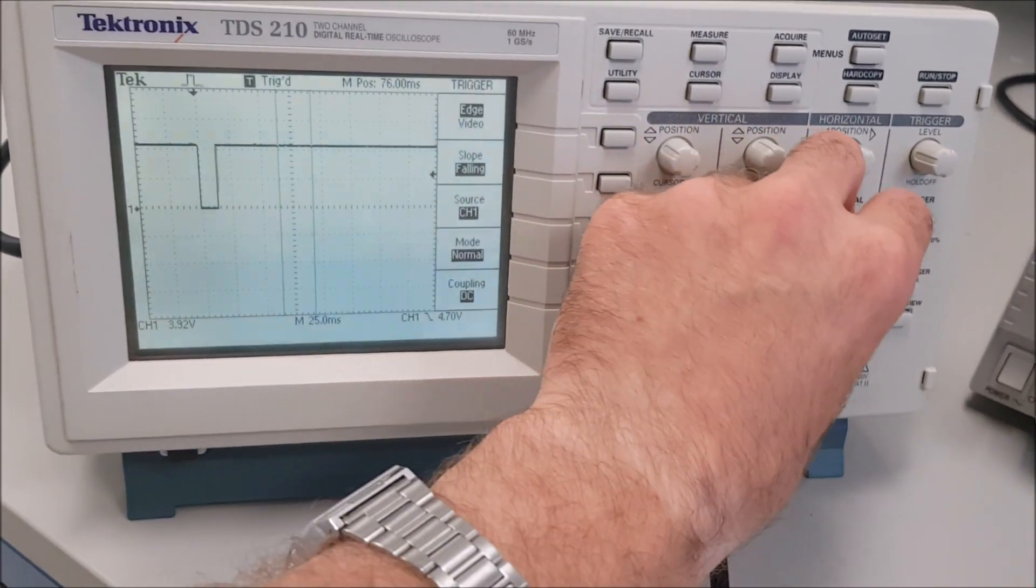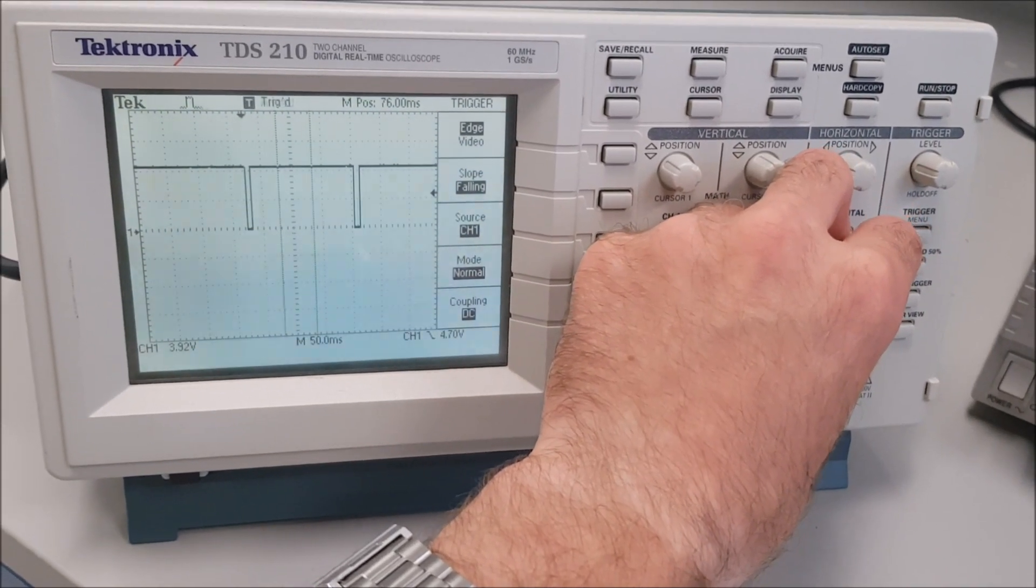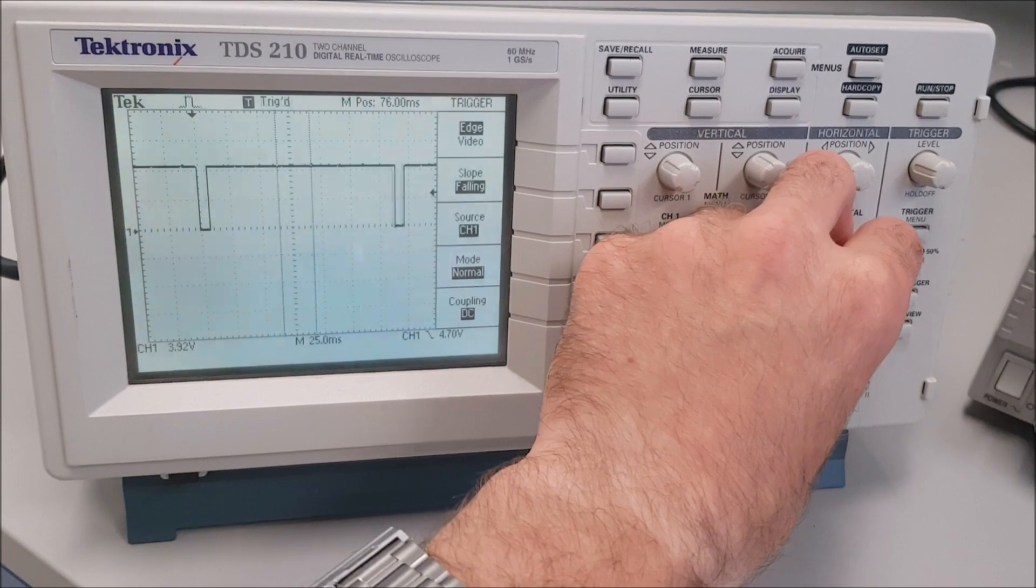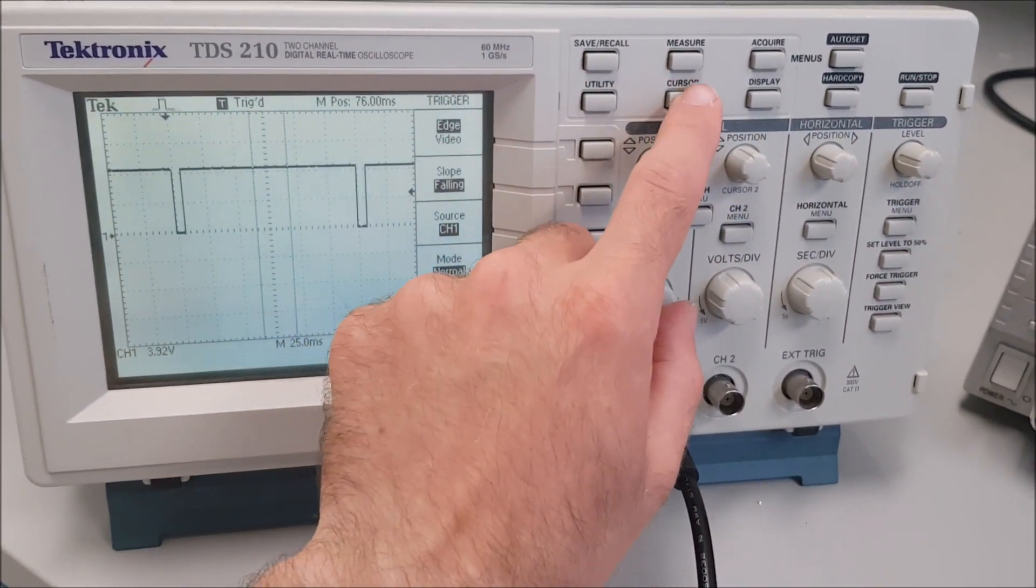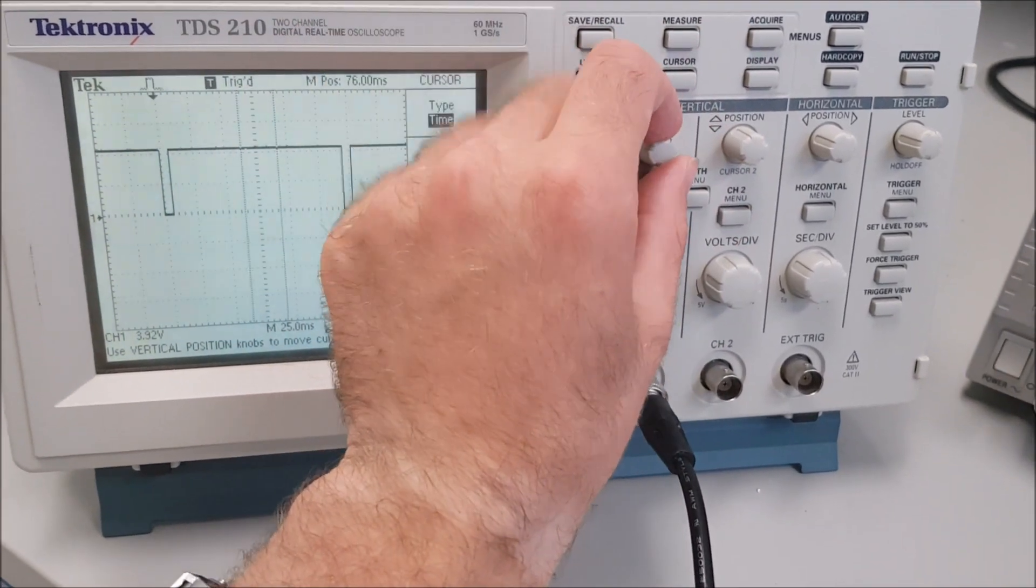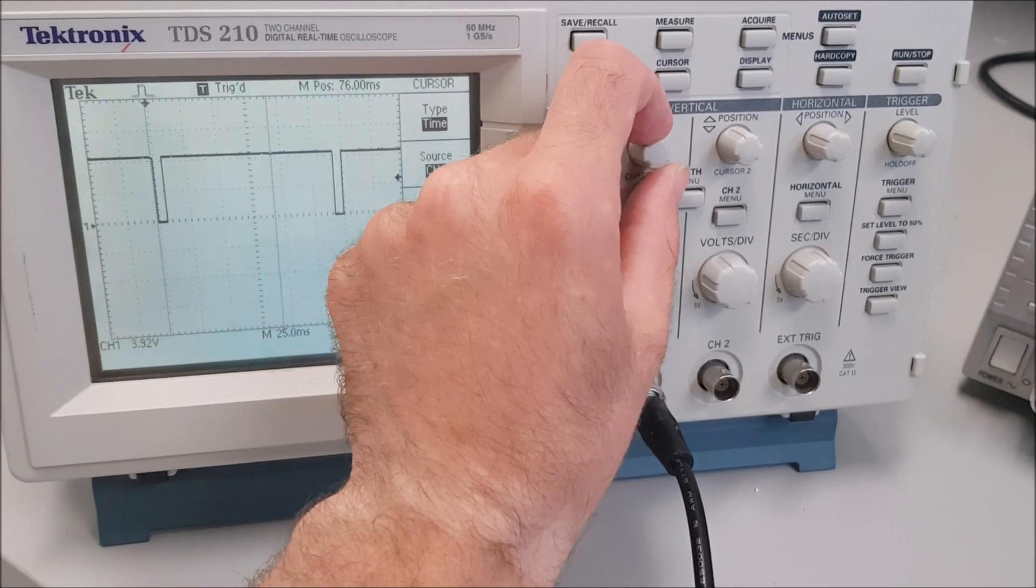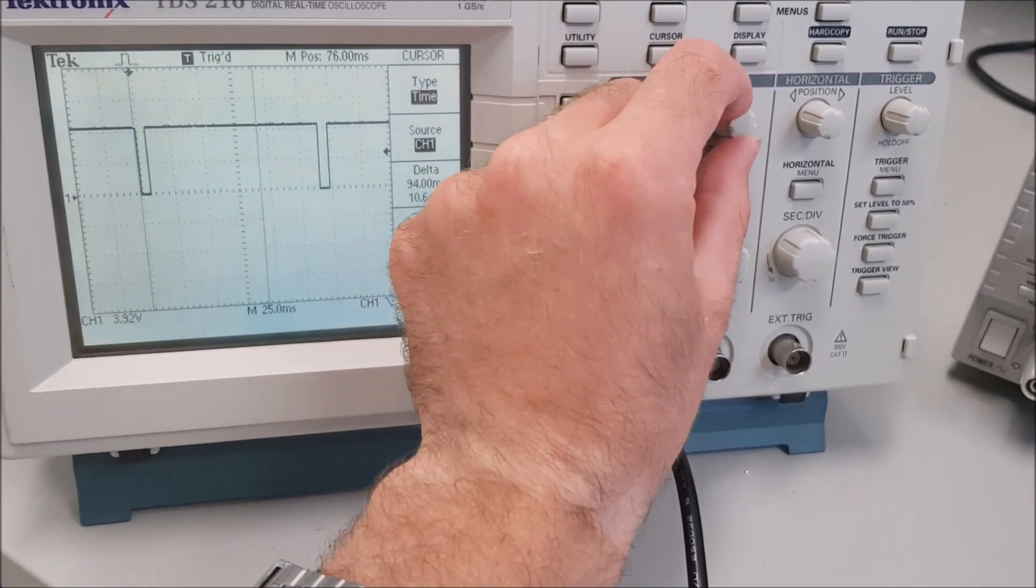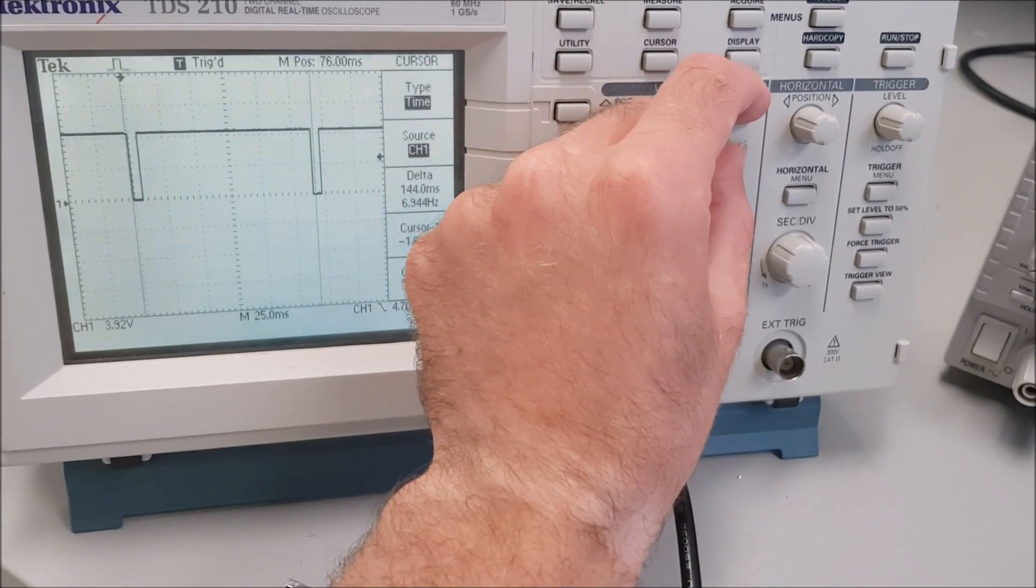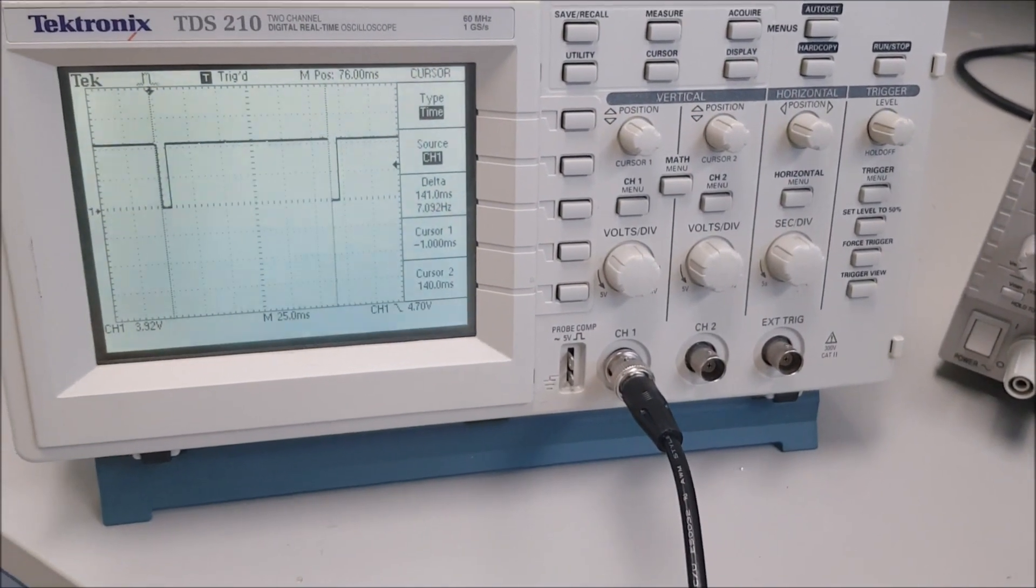Now I'm adjusting the time scale so I can measure the rotational rate. I'm adjusting the cursor here to measure time. Measuring from one edge to the other gives me 141 milliseconds.